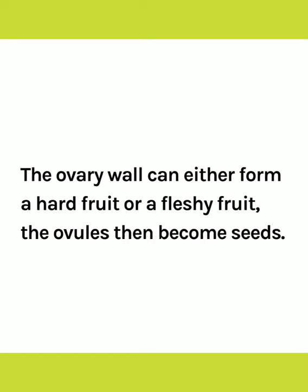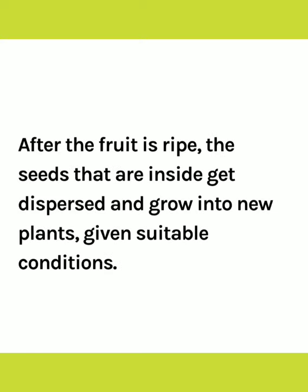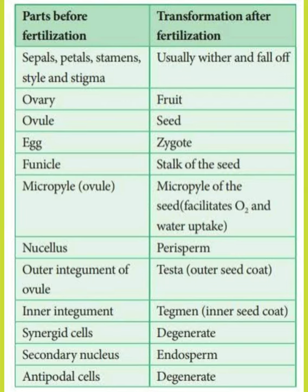When the fruit is ripe, the seeds contained inside are released by one or the other method and grow into new plants in suitable conditions. Here is given the fate of various parts of the ovary after fertilization during the formation of fruit.